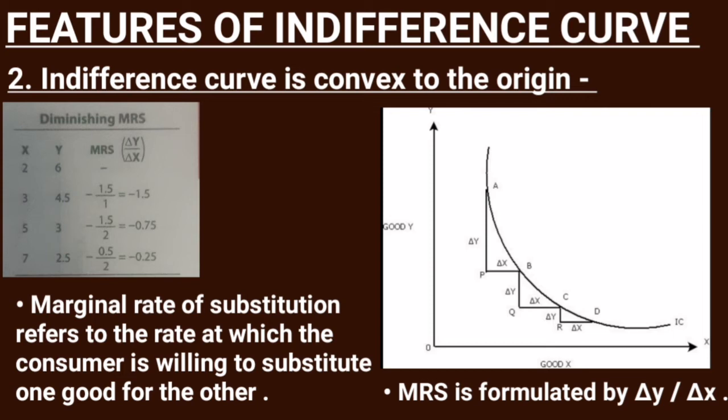For example, with 2 units of X and Y equal to 6, MRS changes from 3 to 2. On the Y-axis, delta Y is minus 1.5 and delta X is 1, giving MRS of 1.5/1. Further, delta X is 2 and delta Y changes from 4.5 to 3, so delta Y is 1.5. MRS is formulated as delta Y divided by delta X plus 1, showing the consumer's willingness to give up one good for another.